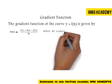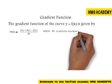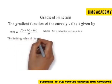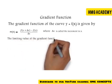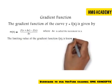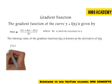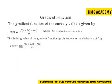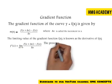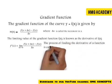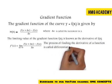The limiting value of the gradient function is known as the derivative of f of x. So f prime of x is equal to the limit as delta x tends to zero of the gradient function. The process of finding the derivative of a function is called differentiation.